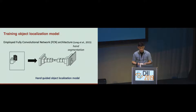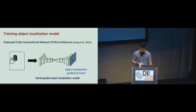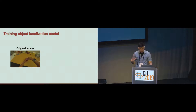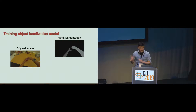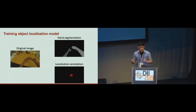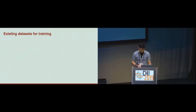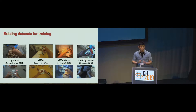Using a fully convolutional network architecture, we first train the model to segment hands from egocentric images, and then we fine-tune this hand model to the object localization problem. First, I'll show the original image, then the hand segmentation. With the original image and hand-segmented image, we train the hand model to segment hands from images. For fine-tuning, we use a different annotation — the localization annotation — where a Gaussian heatmap blob indicates the center of the object of interest. For training, we used four existing datasets: EgoHands, GTA, GTA Gaze Plus, and Intel EgoCentric — around 5,700 images in total.